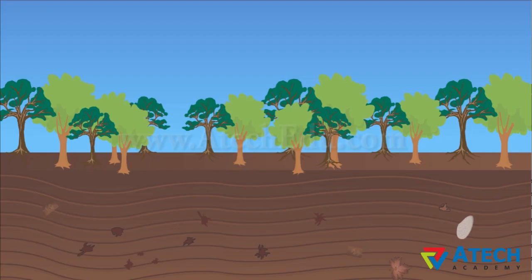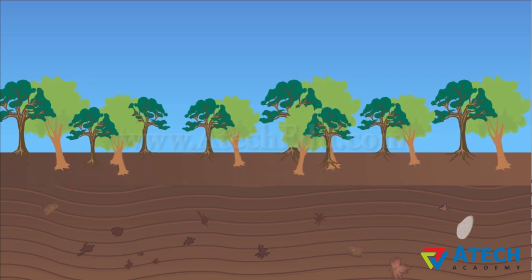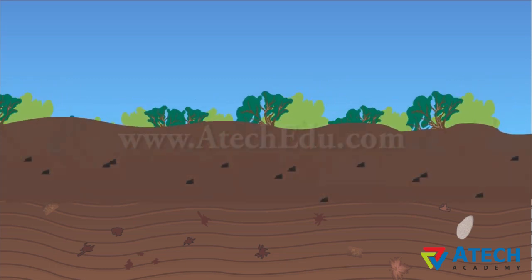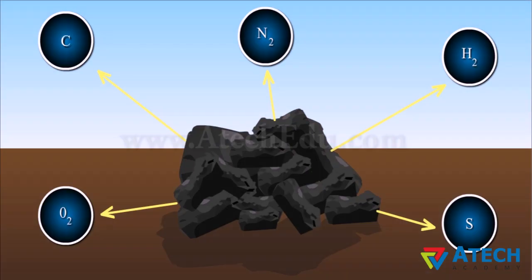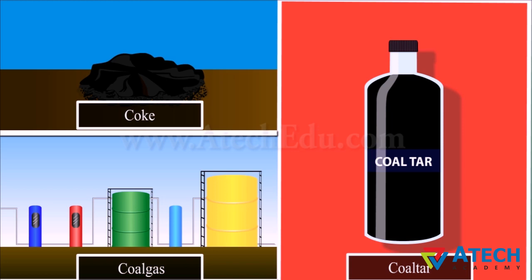Let's conclude. We learnt about the process of coal formation, the physical properties of coal, the products obtained from coal, and the different uses of coal and its products.